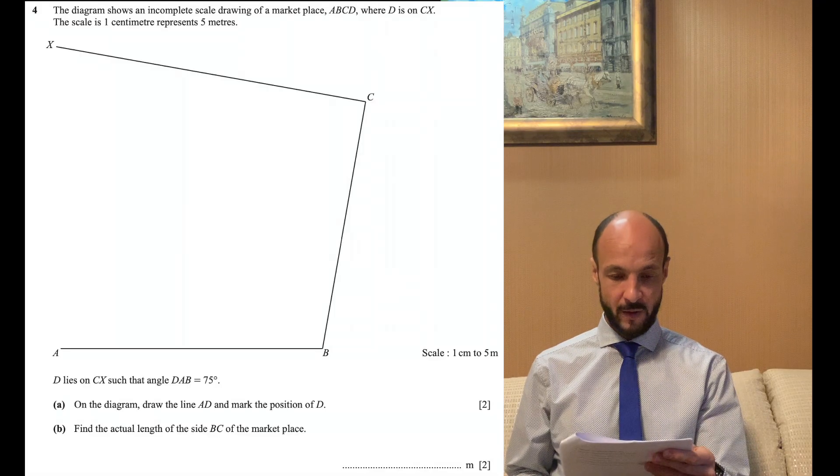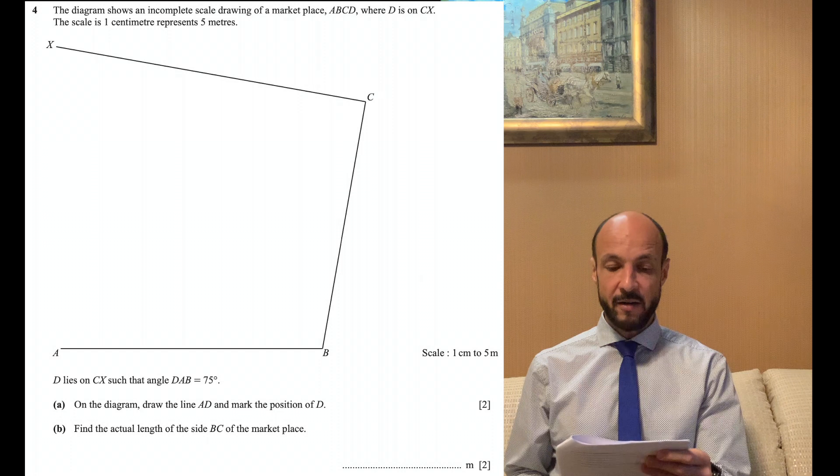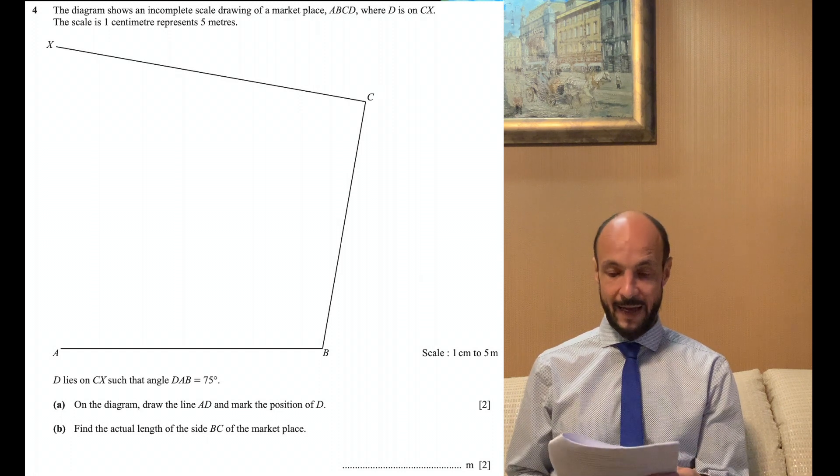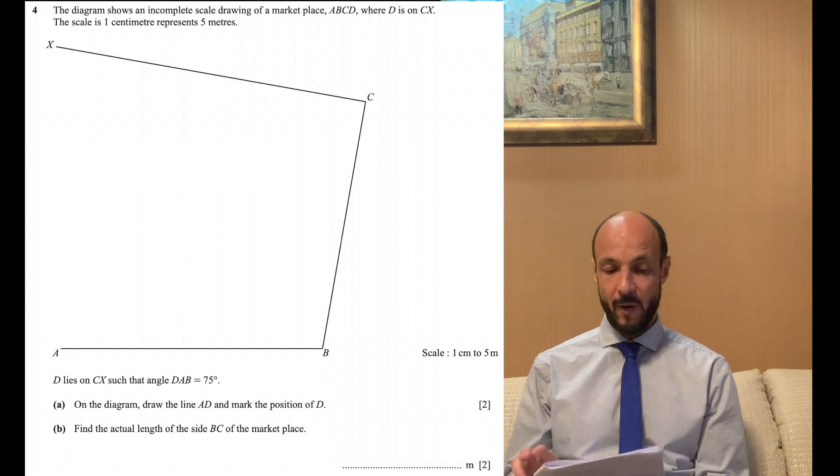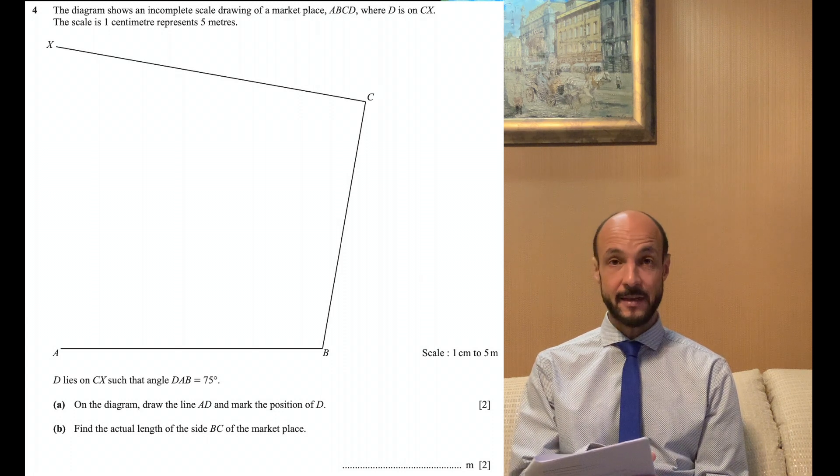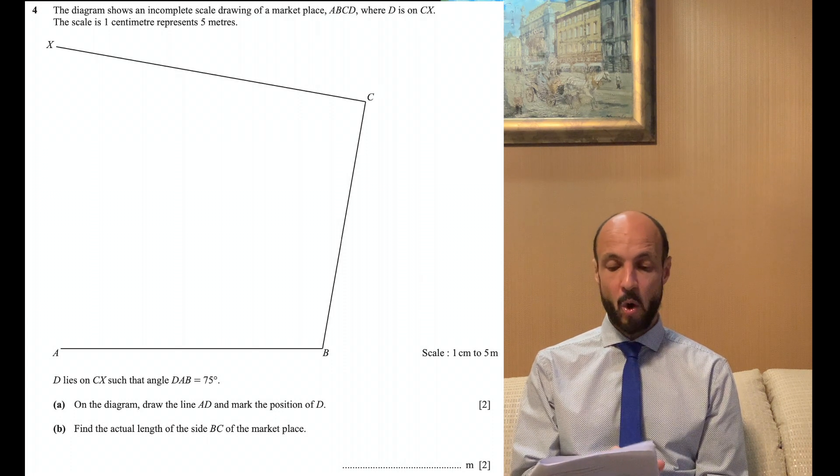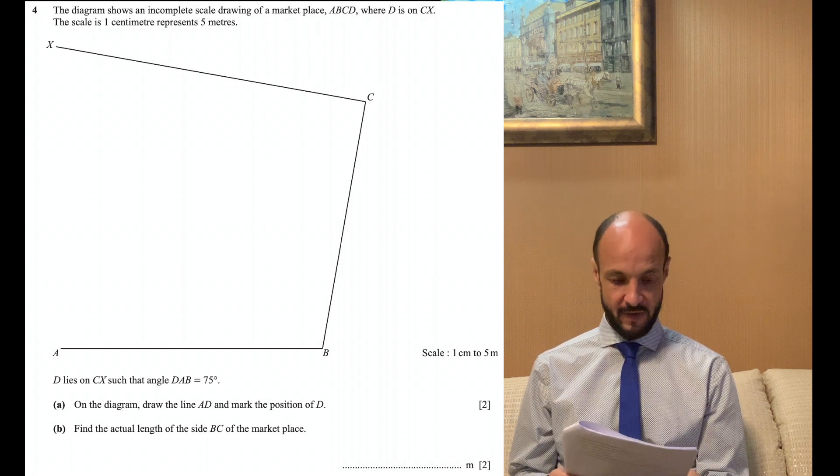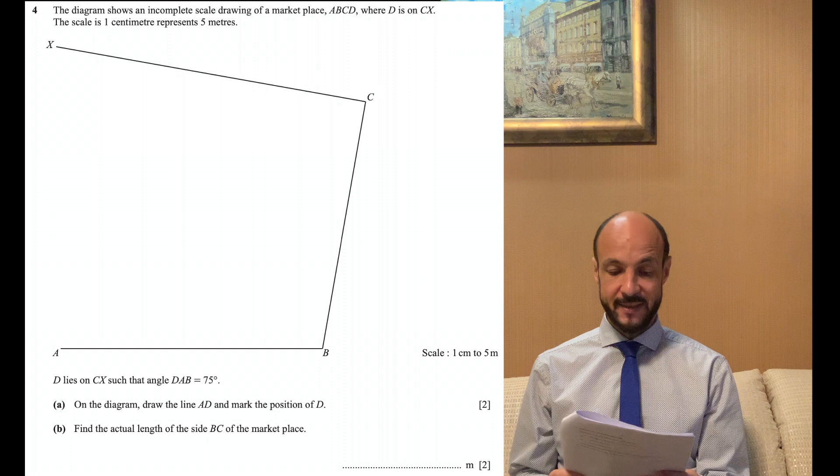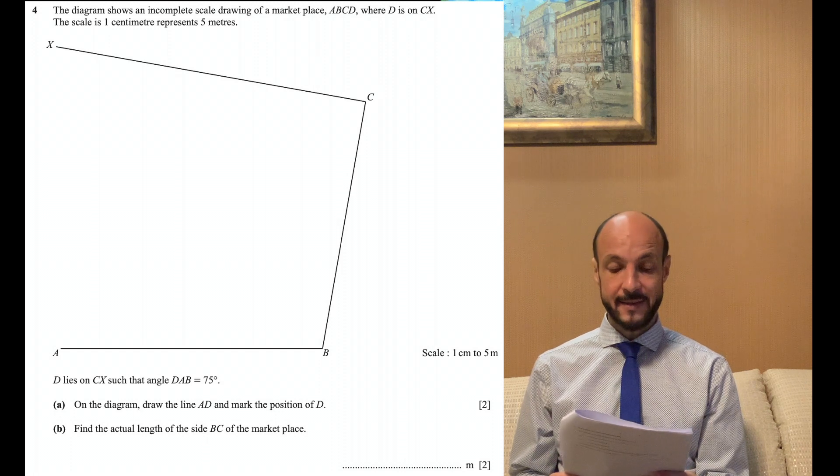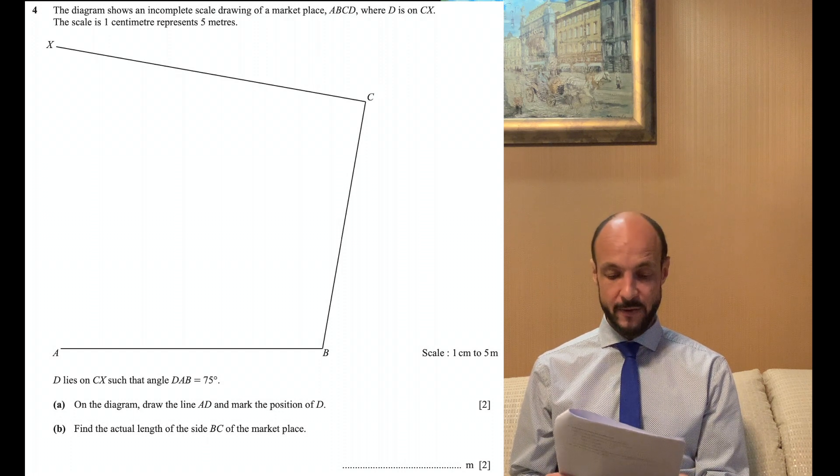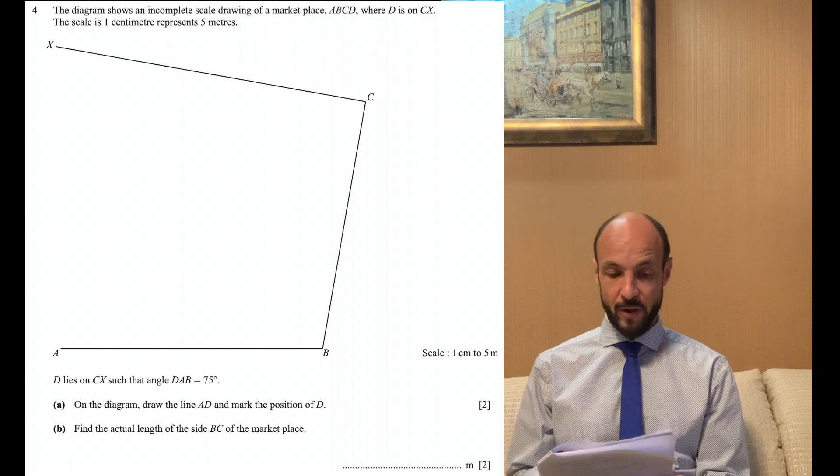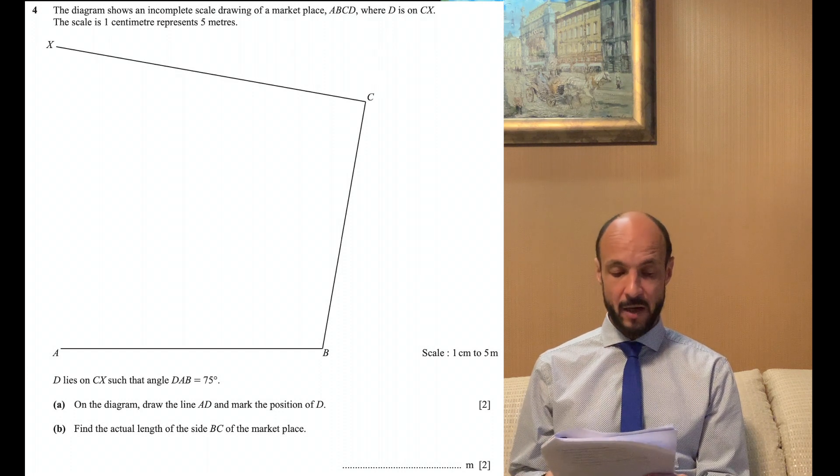Let's carefully read through the question. The diagram shows an incomplete scale drawing of a marketplace ABCD where D is on CX. The scale is one centimeter represents five meters. D lies on CX such that angle DAB equals 75 degrees. On the diagram draw the line AD and mark the position of D.